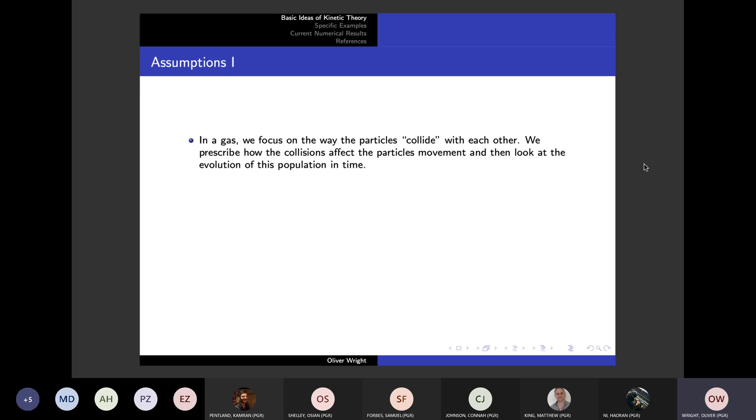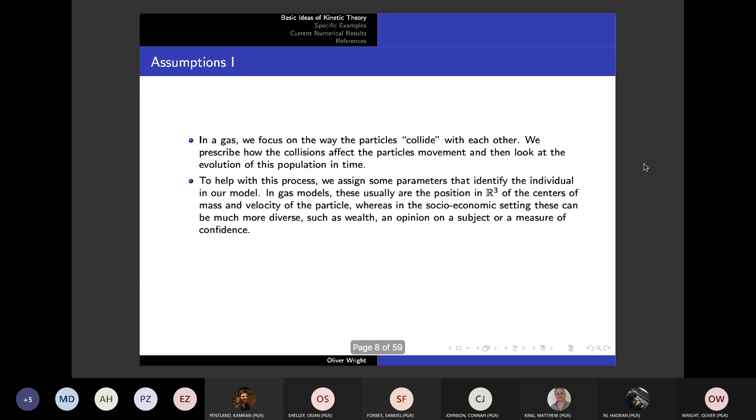In the kinetic theory of gases, we treat each of the individual gas atoms as simple, basic particles that interact with each other by hitting and bouncing off in the way we expect they would do, and then we look at the evolution of that population over time.